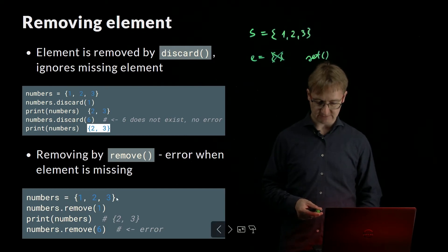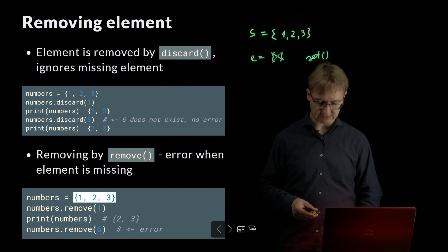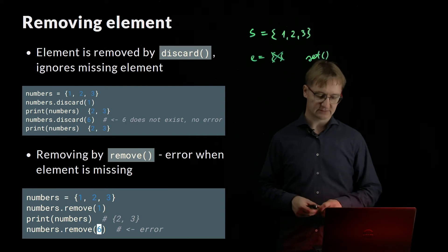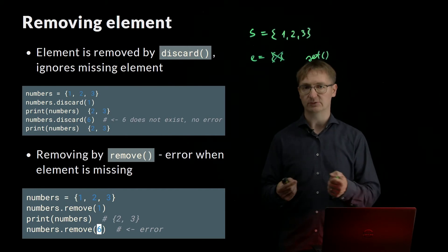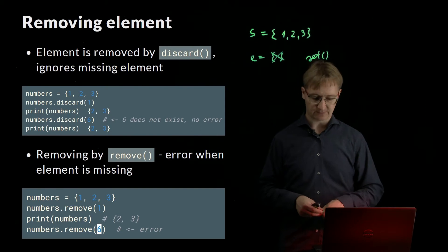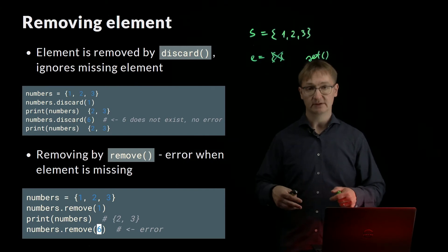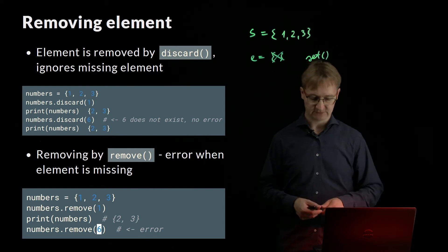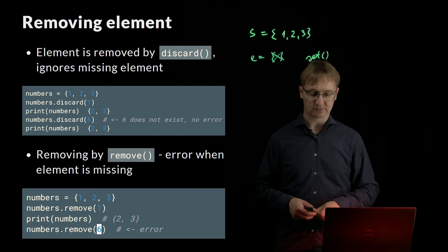Here is an example: I have the numbers set with 3 elements. I remove 1 — because I have this element, everything works and it is removed, leaving 2 and 3. But if I try to remove 6, I get an error. In some programs you might want to use REMOVE because if you try to remove something you don't have, you want to know that. You can catch the error and do something, or if it's a critical problem, let the program stop. If you are just tidying up, DISCARD is fine too.